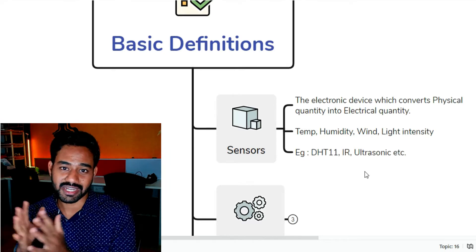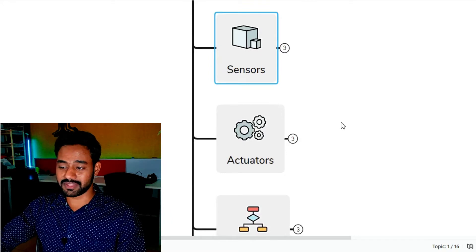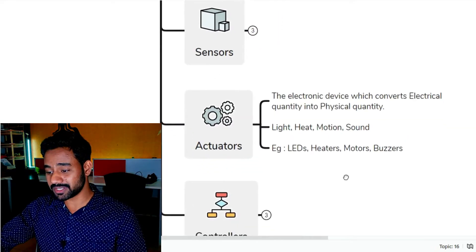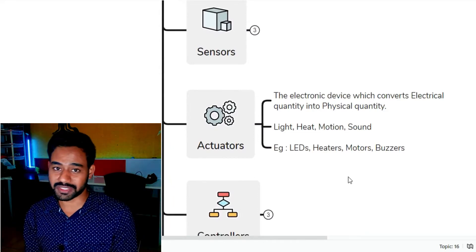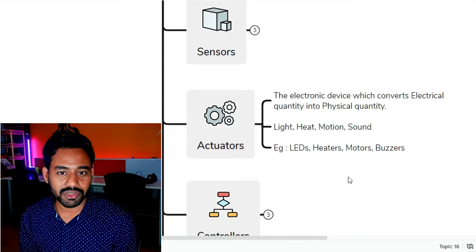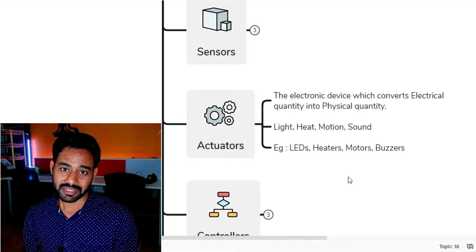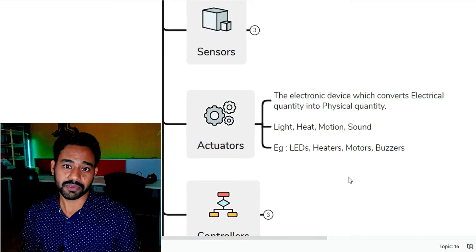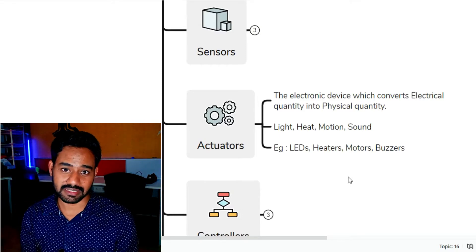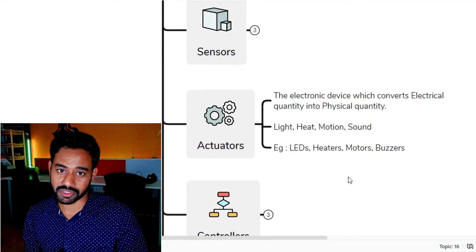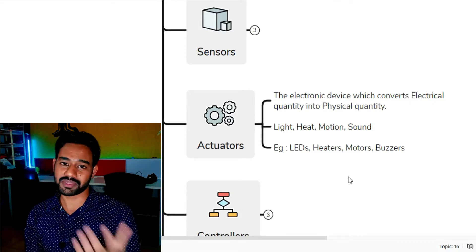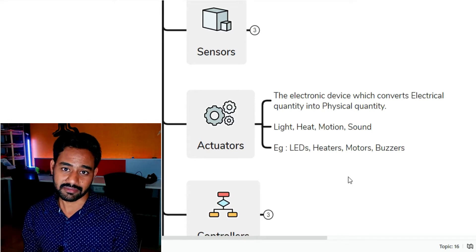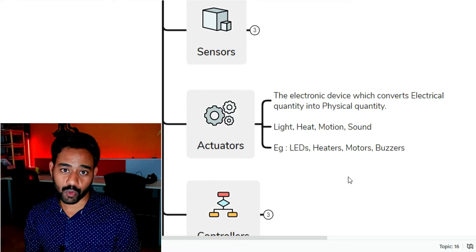Now let me look into actuators, because we need to learn both in the same period so we can understand the difference between sensor and actuator. By definition, an actuator is an electronic device which converts electrical quantity into physical quantity — exactly the vice versa of a sensor. For example, a speaker converts electrical energy into a sound wave, which is a physical quantity. That's why we call it an output device or actuator. Similarly, an LED or LED bulb converts electrical energy into light energy, making these devices actuators.